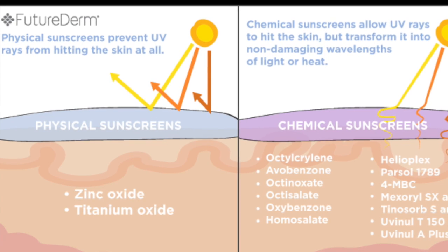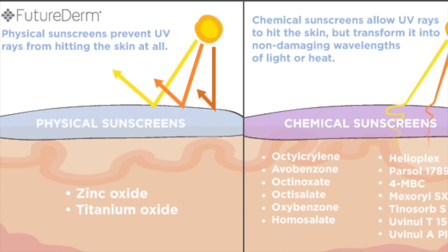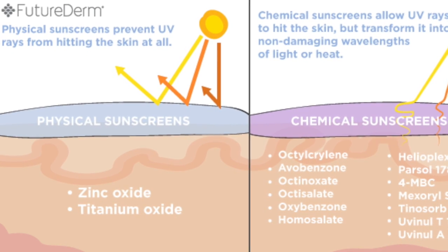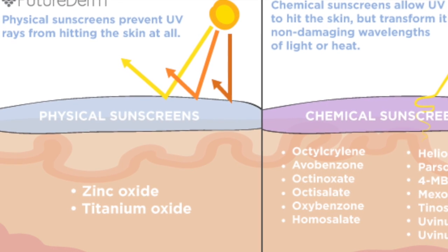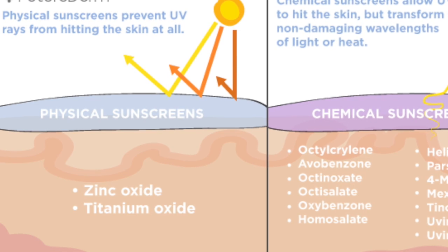The chemicals used in sunscreen are both inorganic and organic. Inorganic molecules, like zinc oxide and titanium oxide, are effective chemicals in sunscreen because they absorb and scatter the UV light.